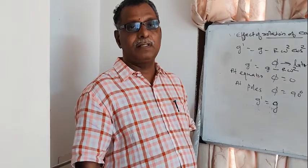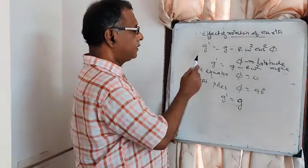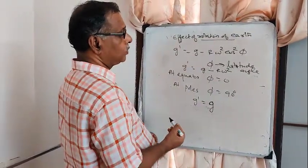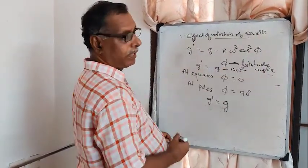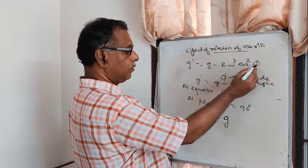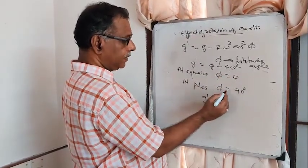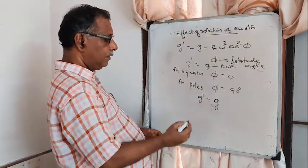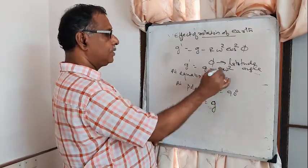The effect of rotation of the earth on g is: g' = g − R·ω²·cos²φ, where ω is the angular velocity of the earth and φ is the latitude angle. At the equator φ = 0, so cos 0 = 1, giving g' = g − R·ω². At the poles φ = 90°, cos 90° = 0, so g' = g. Therefore acceleration due to gravity is greater at the poles than at the equator.